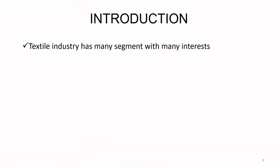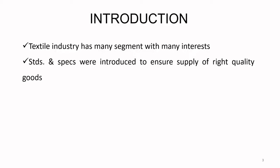The textile industry has many segments with many interests. There are people growing cotton, rearing sheep for wool, converting fibers into yarns, then yarn into fabric, dyeing and printing fabric, converting fabrics into garments, and also people doing washing and dry cleaning — they are all segments of the textile industry.